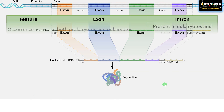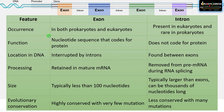Now let us summarize the difference between exon and intron. Exons are present in both prokaryotes and eukaryotes, whereas introns are present in eukaryotes and rare in prokaryotes. The function of exons is to code for protein, whereas introns do not code for protein — their function is not fully known, but they are involved in gene expression and many other functions.